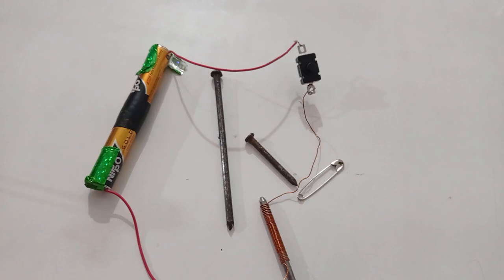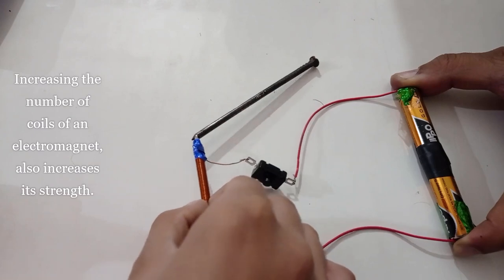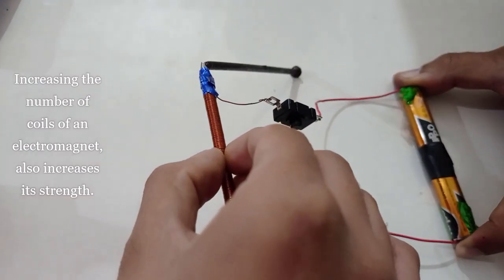First, we will make another electromagnet with more number of coils and the same batteries. We can now lift this heavier nail also.